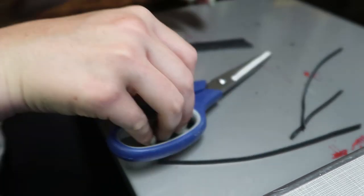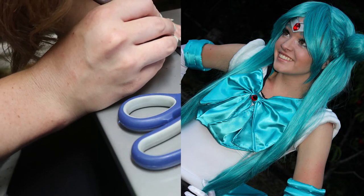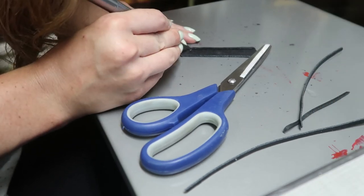If you want to do this a cheaper way, you can use craft foam. I made a craft foam Sailor Crown for my old Sailor Miku cosplay, but I will also have Worbla linked in the description.